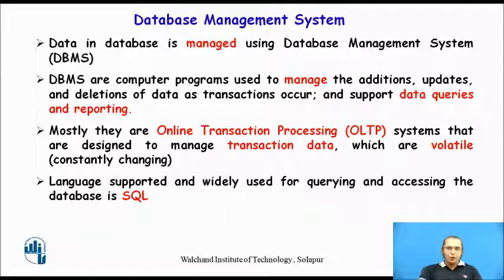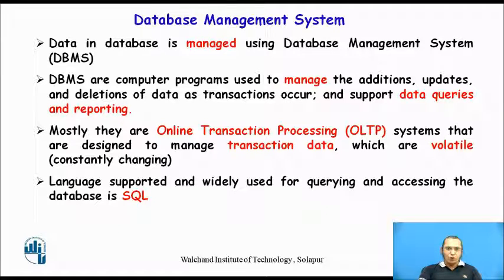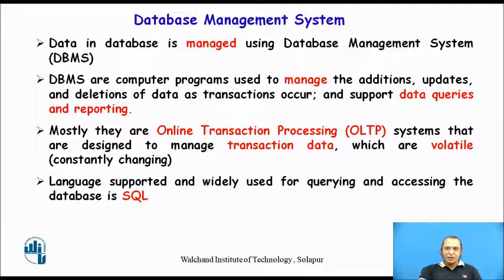Mostly, these DBMS support what is called Online Transaction Processing, or OLTP — processing systems designed to manage transaction data which are volatile. In a typical organization, thousands of transactions happen every day, and all data related to those transactions are captured. This kind of system is called an Online Transaction Processing system. This data is called volatile because it is continuously changing, and this is managed using a database management system.